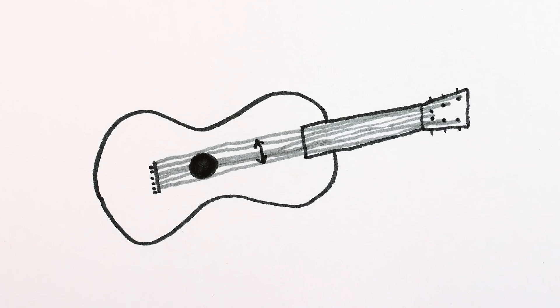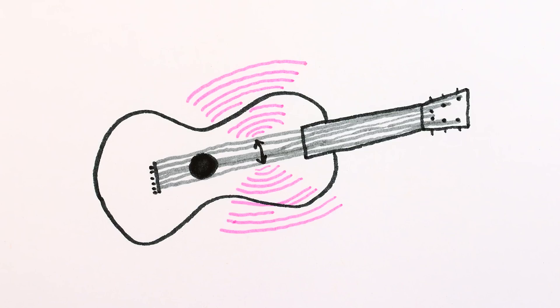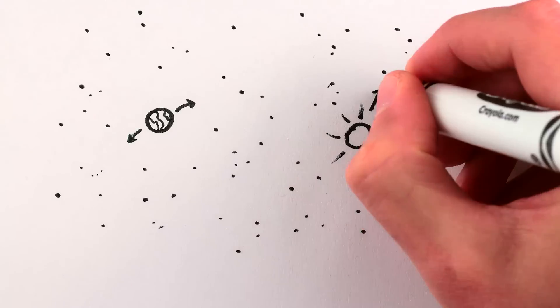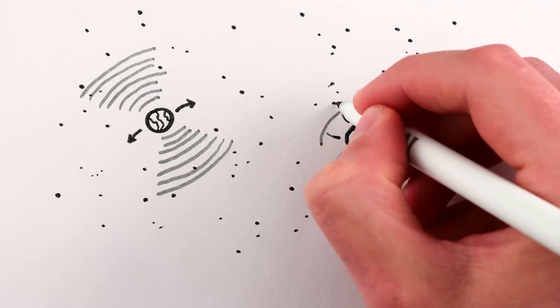Vibrate a piece of metal back and forth really fast, and you get air pressure waves. Shake some electrons back and forth really fast, and you get radio waves. And yes, shake a planet or star back and forth really fast, and you get gravitational waves.